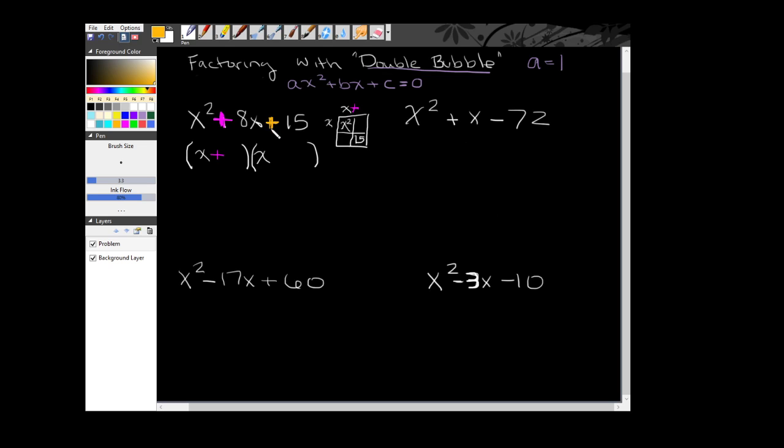And since my bigger factor has to be a positive, I have to think about what the other sign would be to make a positive 15. So in essence, if this is a plus here, my signs have to match. I have to have another positive value to make a positive 15. Otherwise, my box won't quite work.